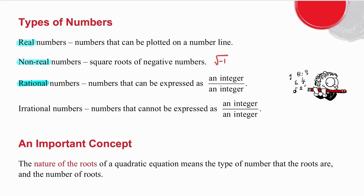Rational numbers are numbers that can be expressed as an integer over an integer. For example, five is rational because I can write it as five over one. Minus two and a half is rational because I can write it as minus five over two. Any number that can be expressed as an integer over an integer, on condition that the denominator is not zero, is a rational number.